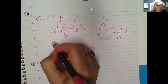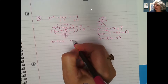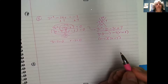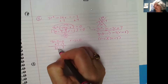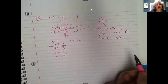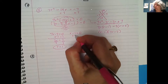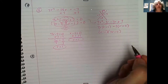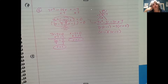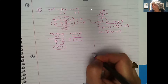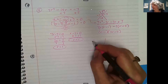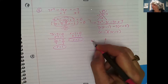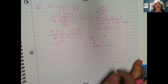Setting each factor equal to zero and solving: from 7r minus 7 equals 0, add 7 to get 7r equals 7, then divide by 7 to get r equals 1. From r minus 1 equals 0, add 1 to get r equals 1. We get the same answer both times. When a quadratic equation gives only one value, that means the vertex of the parabola sits right on the x-axis, giving only one zero.